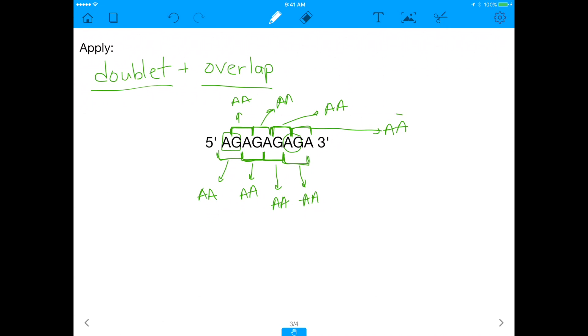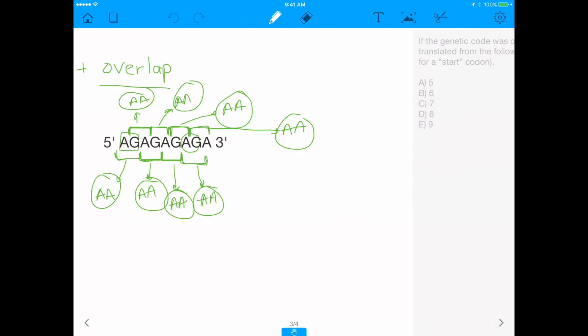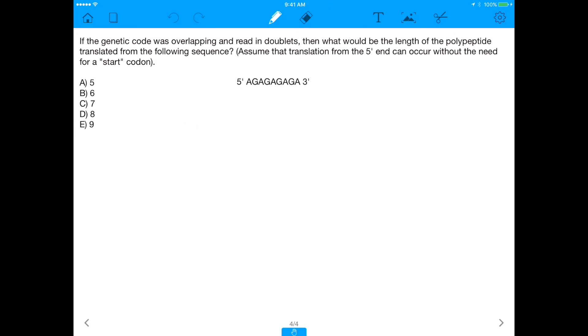So if you now count the number of amino acids we have, we have one, two, three, four, five, six, seven, eight. And this question, which seemingly may have confused you in the beginning, if you go through it step by step, is actually relatively simplistic. And therefore, we actually got the answer because we did the work and we were able to show that this comes out to eight amino acids. And therefore, the question that's asking, what would be the length of the polypeptide translated from the following sequence? It would have to be eight. So the answer here is D.